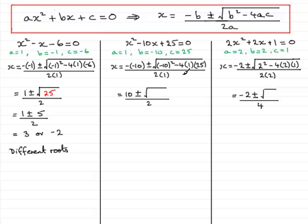Now let's go on to this second equation: x squared minus 10x plus 25 equals 0. We've got a equals 1, b is minus 10, c equals 25. If we put these values into the quadratic formula, looking at the square root now, what we've got is minus 10 squared, which is 100, and minus 4 times 1 times 25, which is minus 100. So that's going to give us the square root of 0.